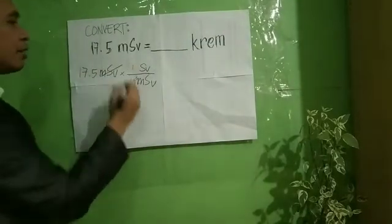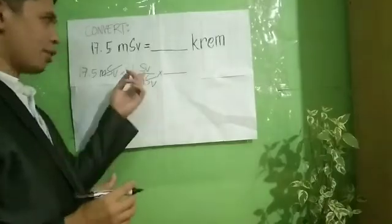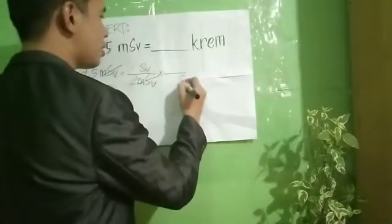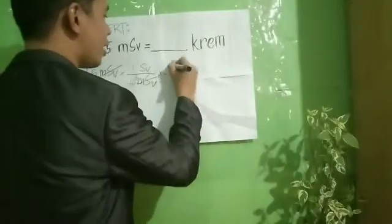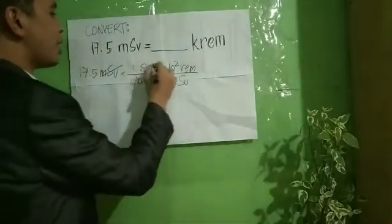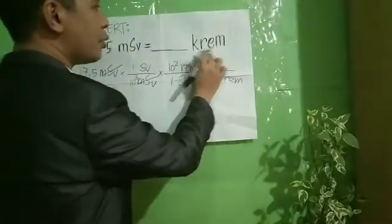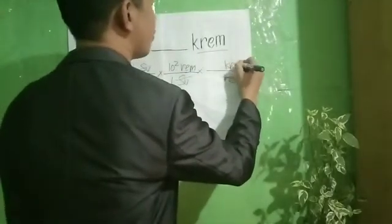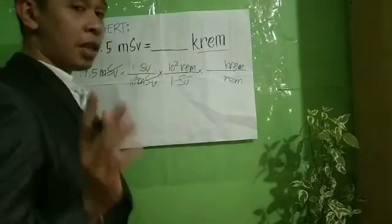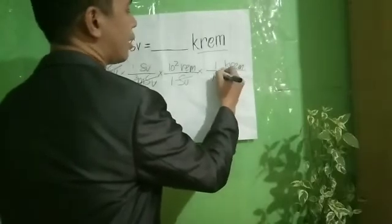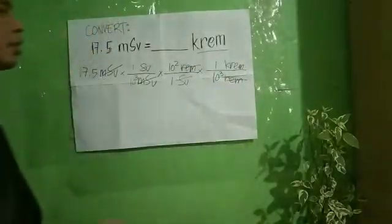Cancel the millisieverts; what remains is sieverts. Now convert SI to traditional: sieverts to rem. For every 1 sievert, there are 100 rem. Cancel sieverts, and copy rem as the remaining unit.